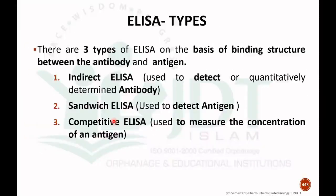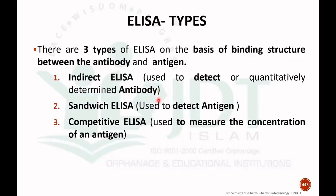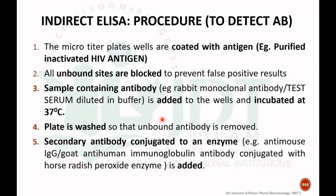The different types of ELISA are mainly classified based on the binding structure between the antibody and antigen. There are three types of ELISA: indirect ELISA, which is used to detect antibody; sandwich ELISA, which is used to detect antigen; and competitive ELISA, which is used to measure the concentration of antigen.